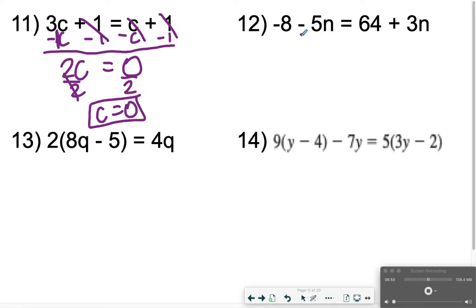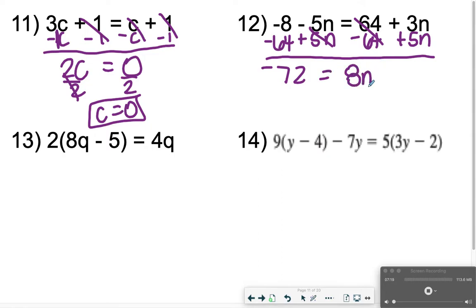Again, for number 12, I'm going to move my variables to the right, just because I want to keep those positives, but when I subtract my constants, minus 64, those are going to end up with negatives, and that's okay. Remember, it doesn't matter if you move your variables to the left or to the right, just as long as you use the correct operations. Negative 8 minus 64, that's going to give me negative 72. And then 3n plus 5n is 8n, dividing both sides by 8. Negative 72 divided by 8 will give me negative 9.